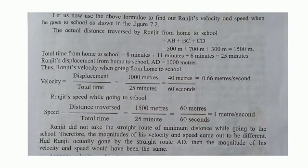Let us now calculate Ranjit's velocity and speed when he goes to school. The actual distance traversed by Ranjit: A to B is 500 meters, B to C is 700 meters, and C to D is 300 meters. The total distance traversed from home to school is 1500 meters. The time required: A to B is 8 minutes, B to C is 11 minutes, and C to D is 6 minutes — total time is 25 minutes. Ranjit's displacement from home to school, AD, equals 1000 meters. Therefore, Ranjit's velocity equals displacement divided by total time: 1000 meters divided by 25 minutes, which equals 0.66 meters per second.